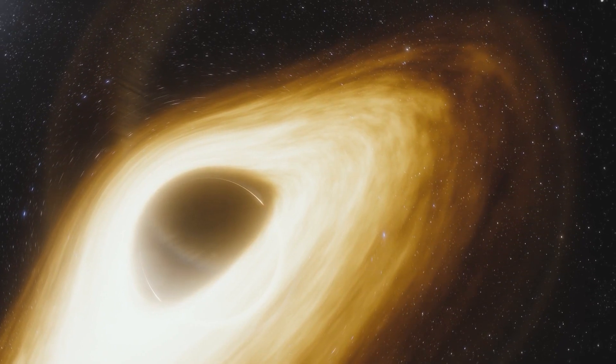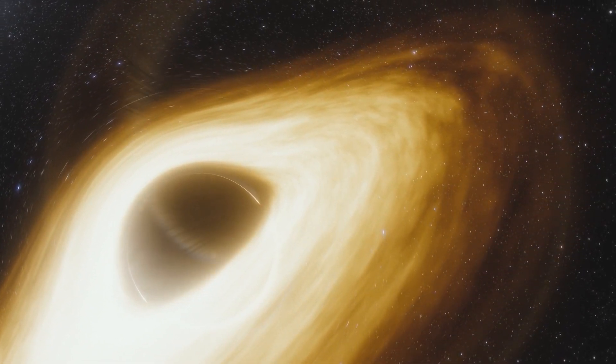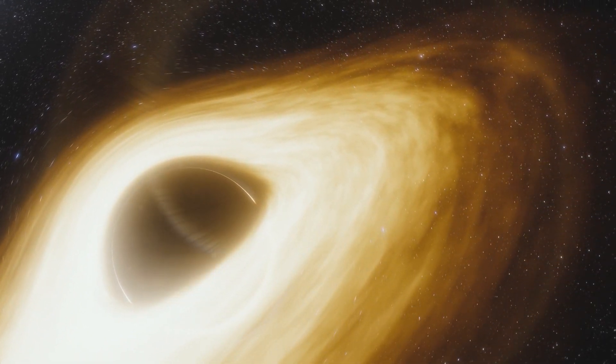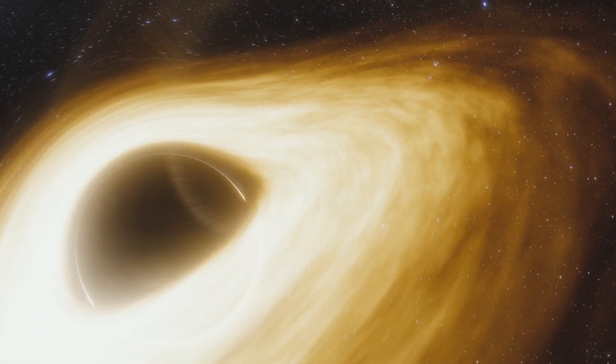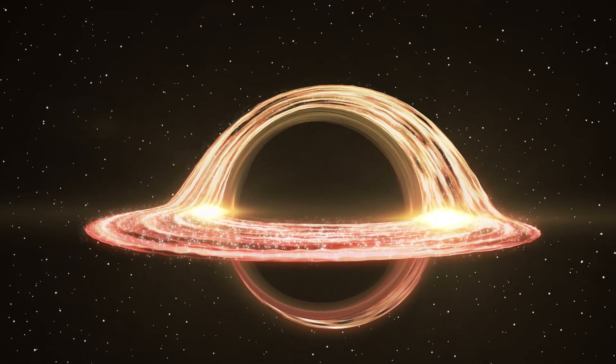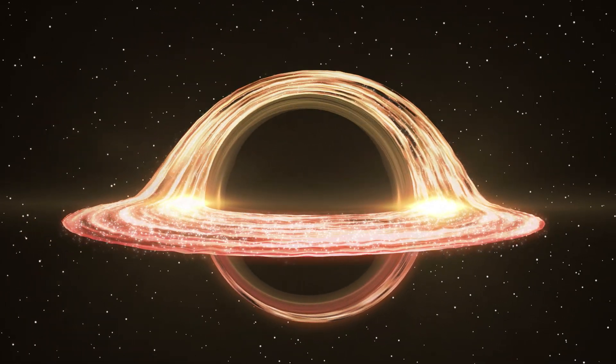The event horizon is the point of no return for anything that crosses it, as the gravitational pull of the black hole becomes so strong that not even light can escape. This means that any object that crosses the event horizon is effectively trapped within the black hole, and its fate is determined by the singularity at the center of the black hole.